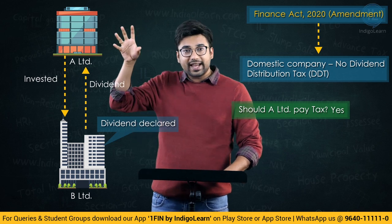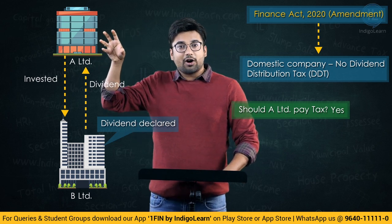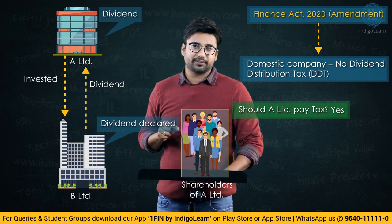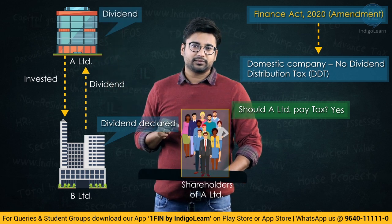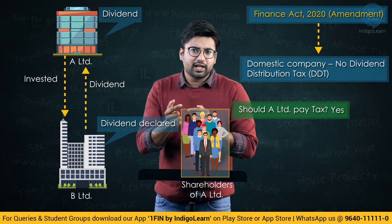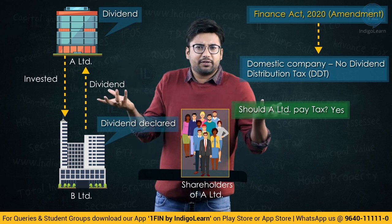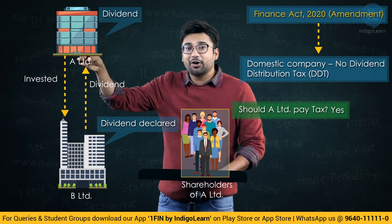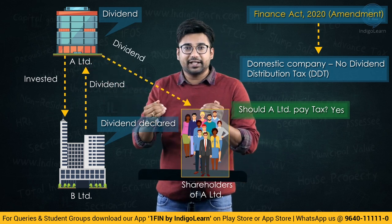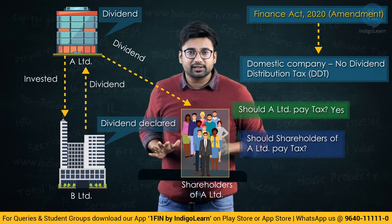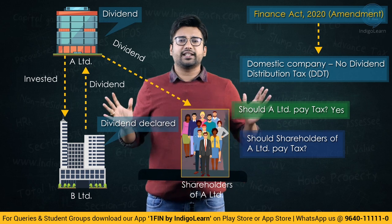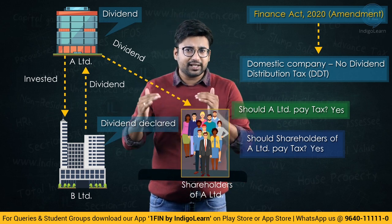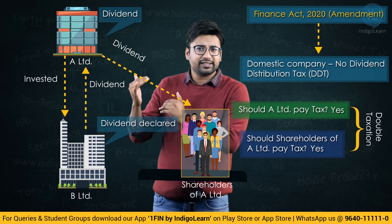Now let us say this A Limited is also declaring dividend to its ultimate shareholders. A Limited declares dividend — there is no dividend distribution tax. The ultimate shareholders who actually receive the dividend, will they be liable to tax? The immediate answer is yes, they will also be liable to tax.